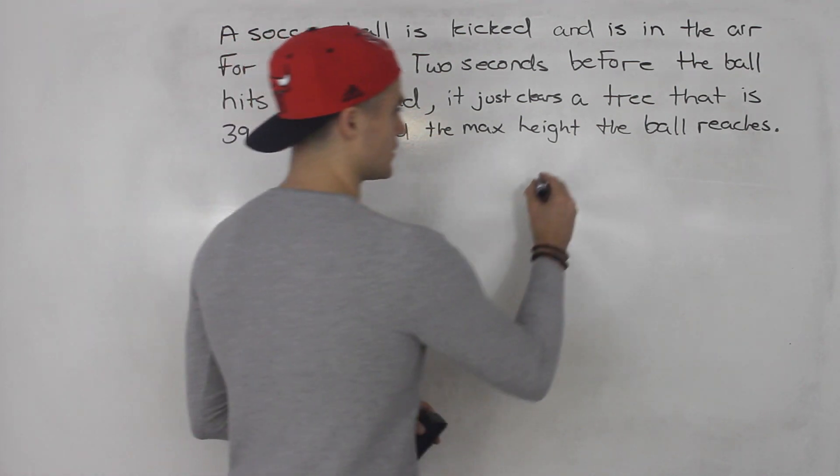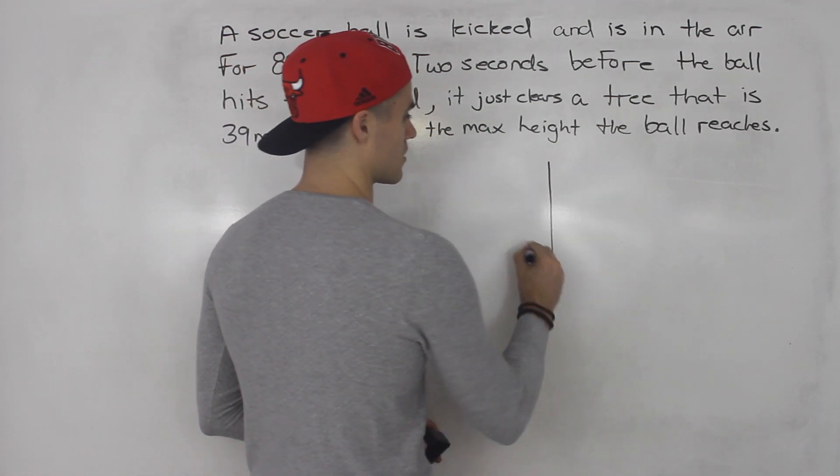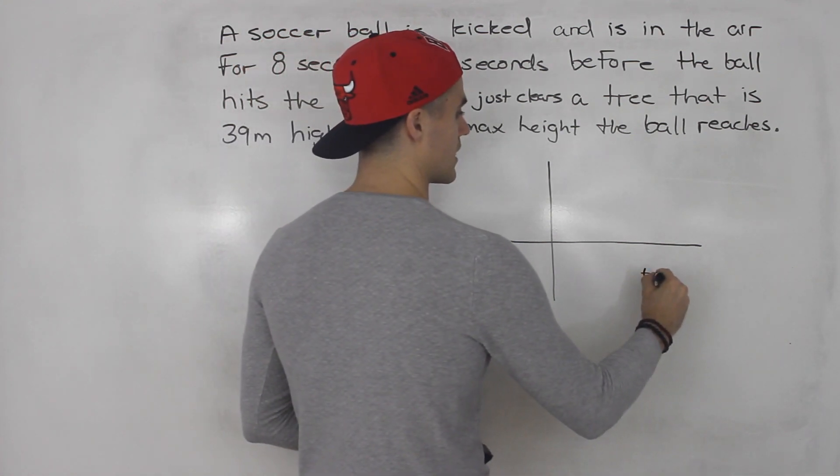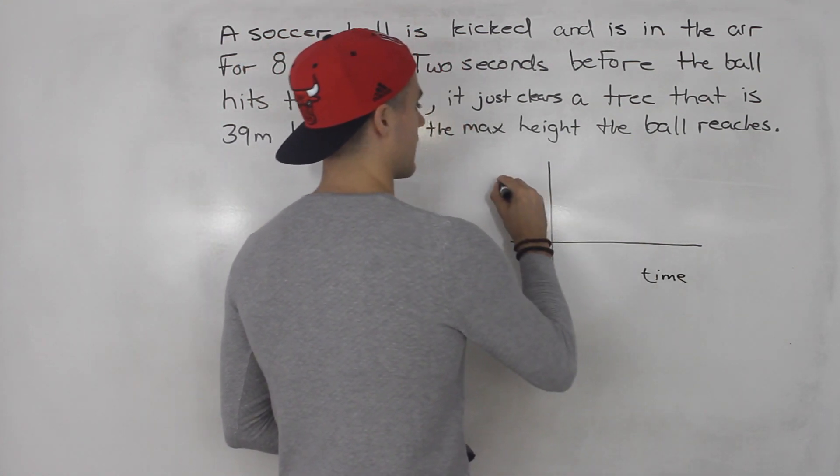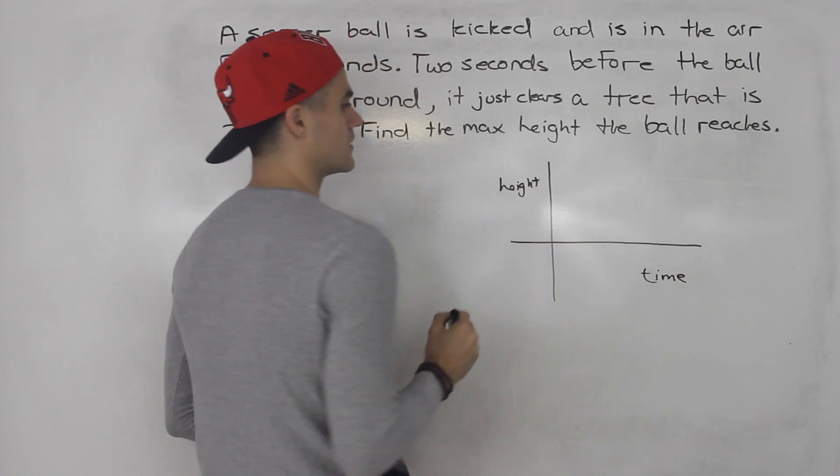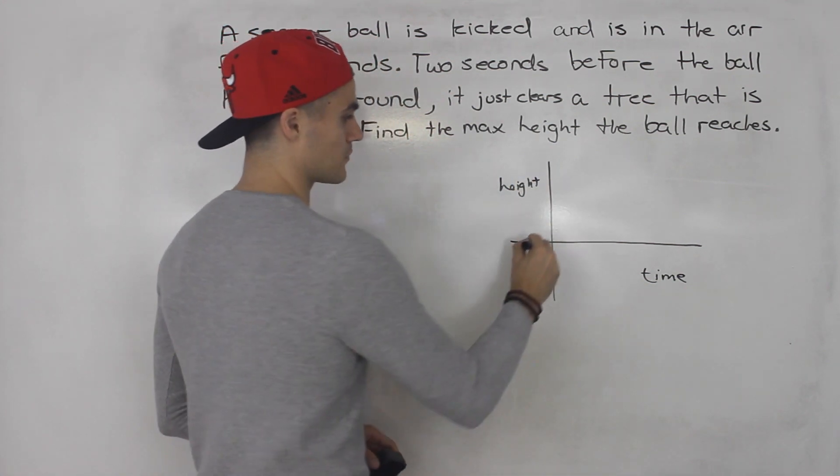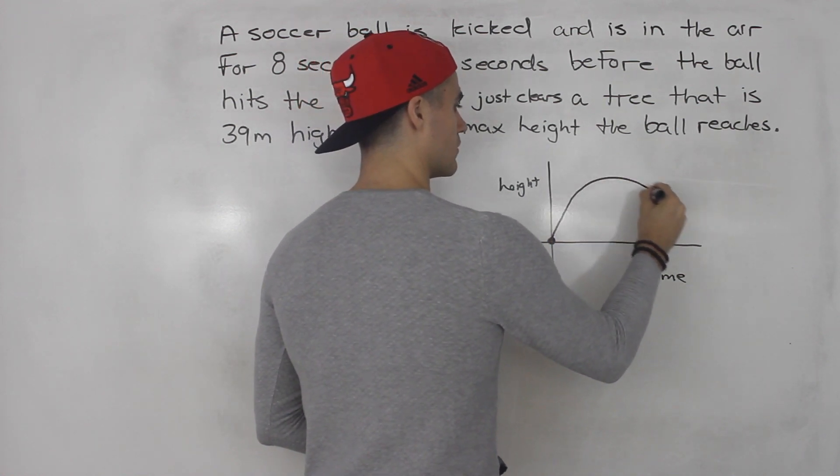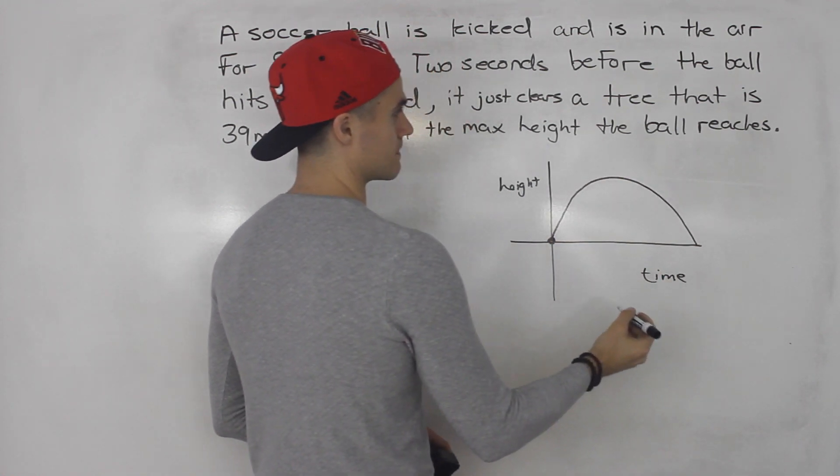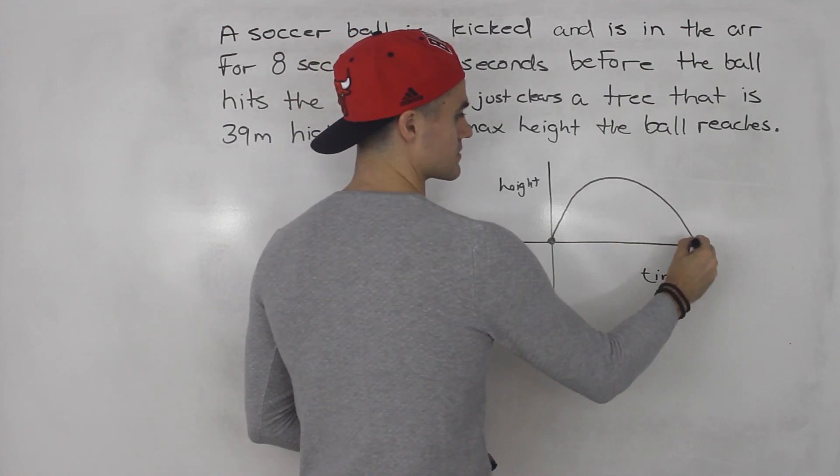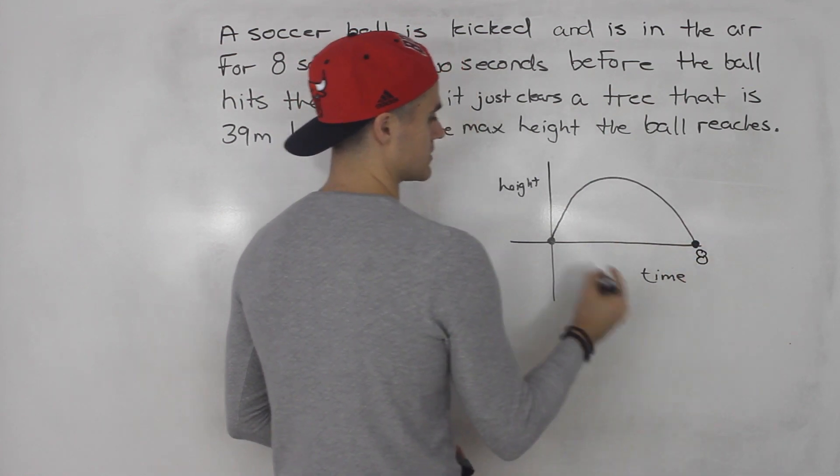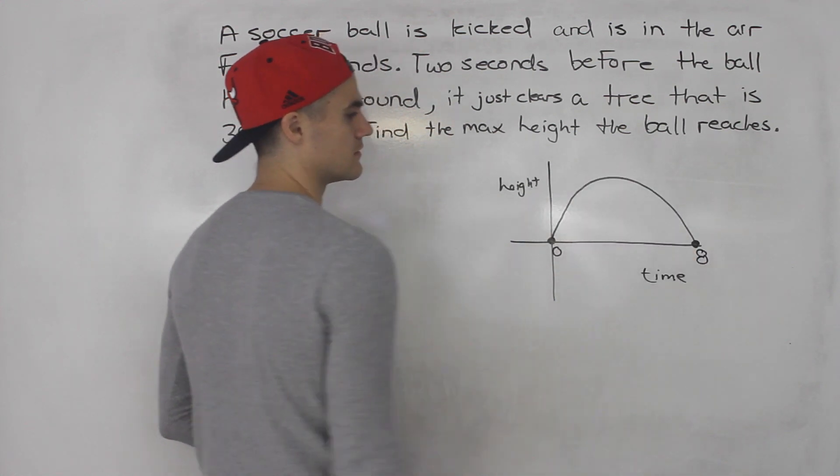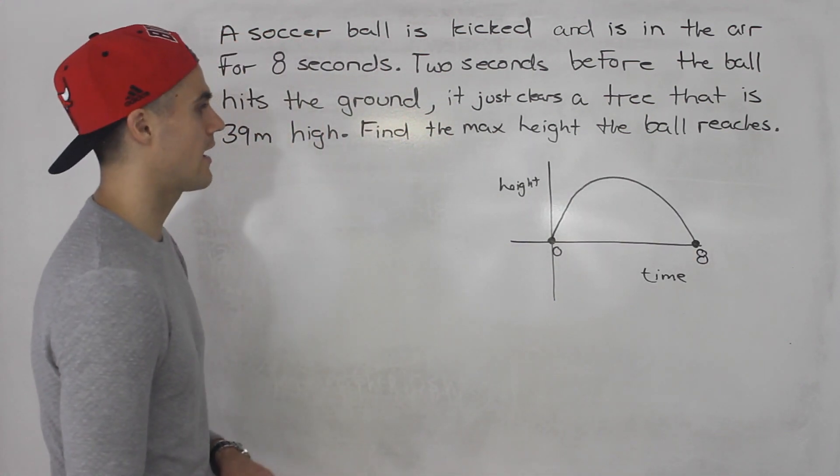So with a question like this, first thing you want to do is draw a diagram. So we've got the time over here and then we have the height here. So a soccer ball is kicked. Let's say it's kicked from the origin and it travels like that. And it's in the air for eight seconds. So we know this here is eight. So it's starting at zero seconds and then hitting the ground at eight seconds.